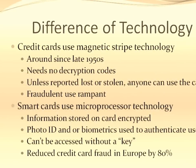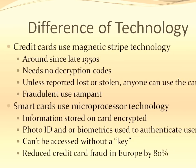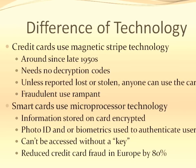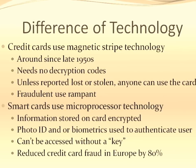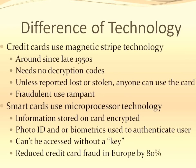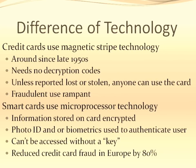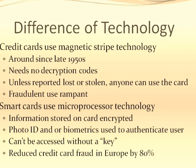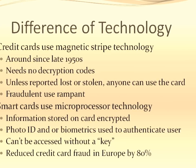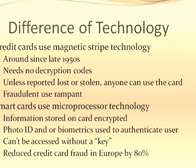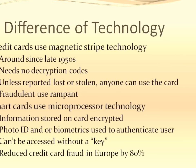The card contains a microprocessor that can encrypt and decode access information as well as the information stored on the card. The only access to the processor is through the use of a card reader containing the encryption codes. The card usually has a photo ID of the card holder and can contain biometric identification information, such as a fingerprint, an iris scan, or other indicator.